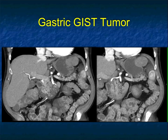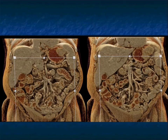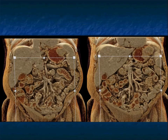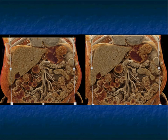Another example: a mass coming off the region of the greater curvature, really high up — very nice appearance. Here is the cinematic rendering; I have been looking at cinematic rendering with texture mapping in GIST tumors. You can see the homogeneous enhancement, and when I change the texture, you can see the texture of the lesion. We are looking at texture for determining tumor types and potentially predicting outcome.